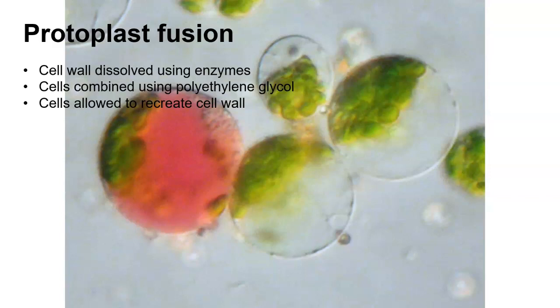Protoplast fusion is used in a lot of different things. This shows plant protoplasts where the cell wall has been removed. You can see the protoplasts in there have chloroplasts. By placing it in polyethylene glycol it will cause them to come together and form one cell.